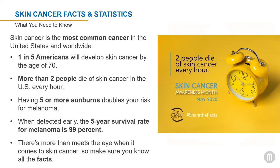Skin cancer is an out-of-control growth of abnormal cells in the epidermis caused by unrepaired DNA damage that triggers mutations, leading skin cells to multiply rapidly and form malignant tumors. The main types are basal cell carcinoma, squamous cell carcinoma, melanoma, and Merkel cell carcinoma. The two main causes are the sun's harmful UV rays and UV tanning machines. In the United States, more than 9,500 people are diagnosed with skin cancer every day, more than two people die every hour, and more people are diagnosed with skin cancer each year than every other cancer combined. At least one in five Americans will develop it by age 70.